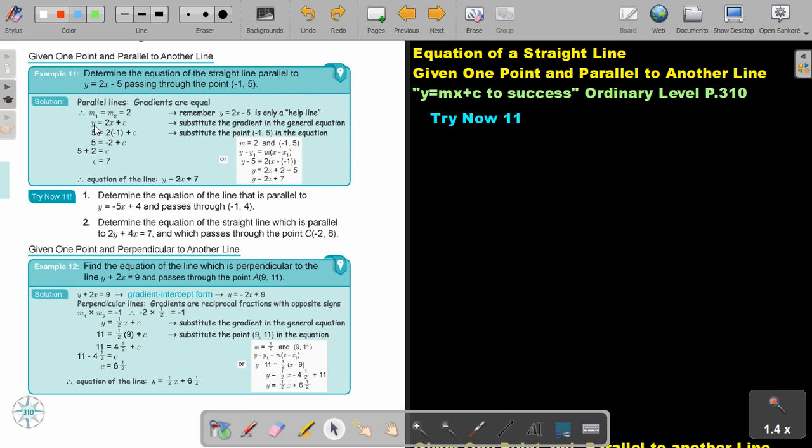Exactly like the previous method, I substitute the gradient. Then I take the extra point, there's the extra point, and don't forget this is your x and this is your y. In the place of y, I substitute 5, and in the place of x, I substitute negative 1. I just multiply this, I'll take over, and the value of c will be 7.